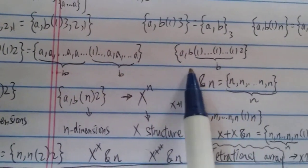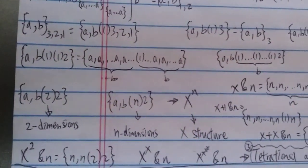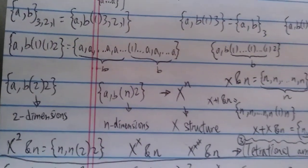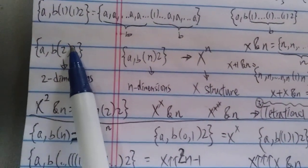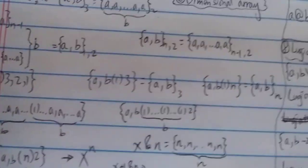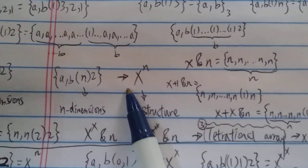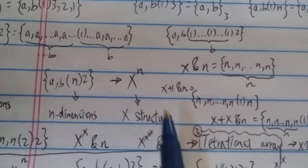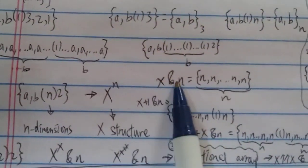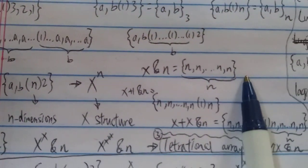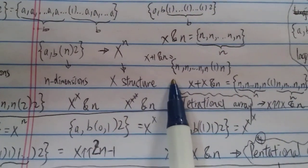Of course you can continue and add as many ones as you want — each additional step escalates very very quickly. You can then change one to two, and two here means two dimensions — that's why it's called a multi-dimensional array. N here means n dimensions. Eventually we get to something called the X structure, which kind of represents x to the power of n. {x,n} means n with n number of n's.